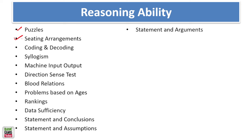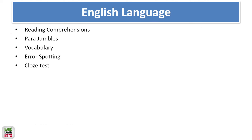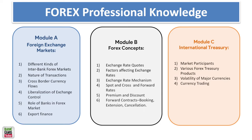For Reasoning, the basic syllabus includes: Puzzles, Seating Arrangement, Coding and Decoding, Coded Syllogism, Coded Inequalities (very important), Inequalities (very important), Machine Input-Output, Direction Sense Test, Problems based on Ages, Ranking, Data Sufficiency, Statements and Conclusions, Statement and Assumptions, and Statements and Arguments. For English Language: Reading Comprehension, Error Spotting, Grammatical Error Spotting, Vocabulary, Para Jumbles, and Cloze Test. A majority of the paper will focus on Reading Comprehension and Error Spotting.